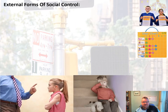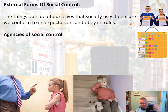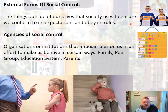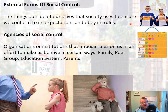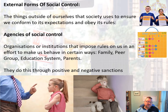Moving on to external social control — these are things that come from outside ourselves that society uses to ensure we're conforming, living up to its expectations, and obeying its rules. There are lots of agencies of social control: organisations or institutions that impose rules to make us behave. That could be family, peer group, the education system, parents. Sanctions can be both positive and negative — sitting on the naughty step, a certificate of achievement, a star chart on the fridge — all used by agencies of social control to make us behave.